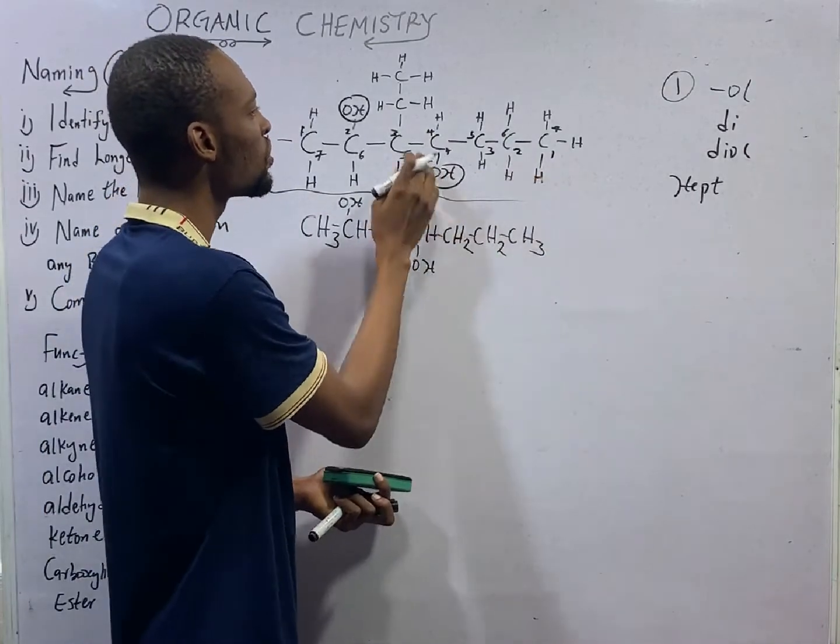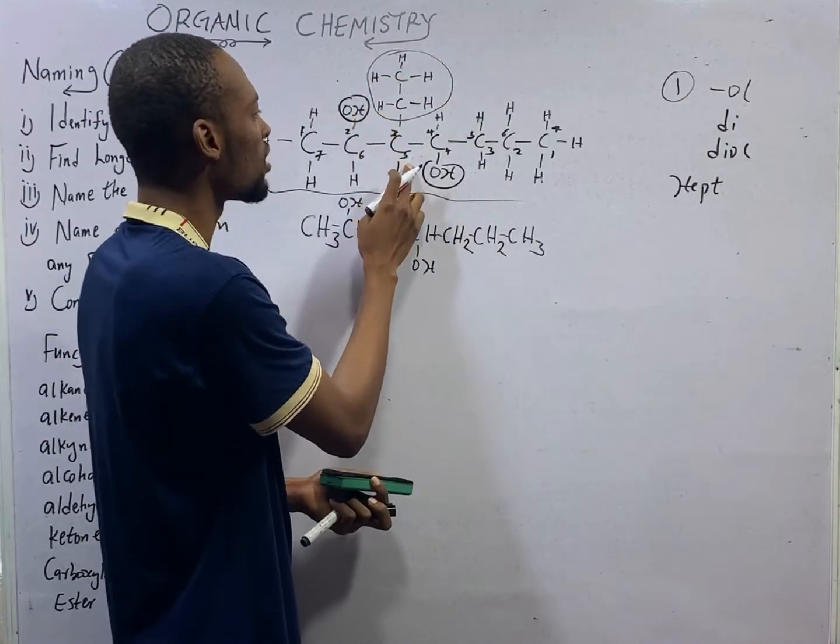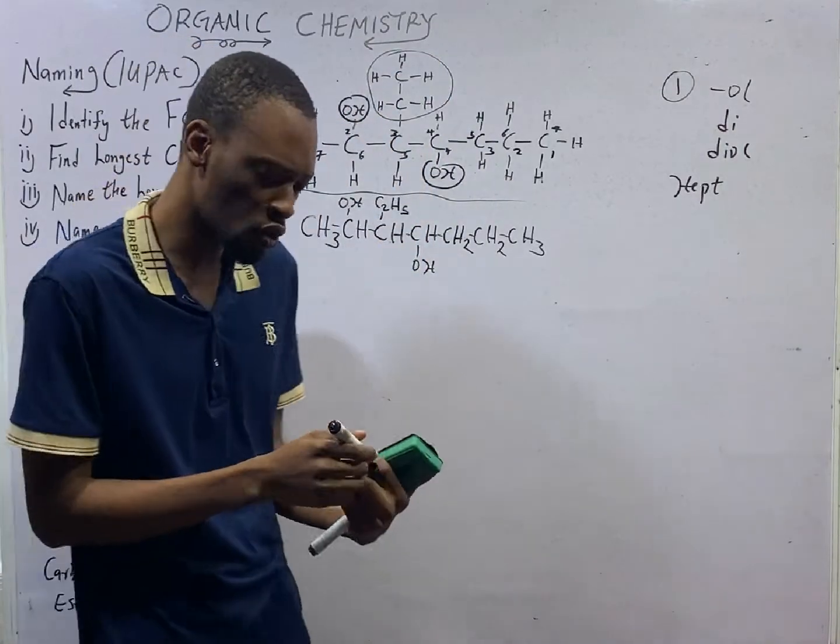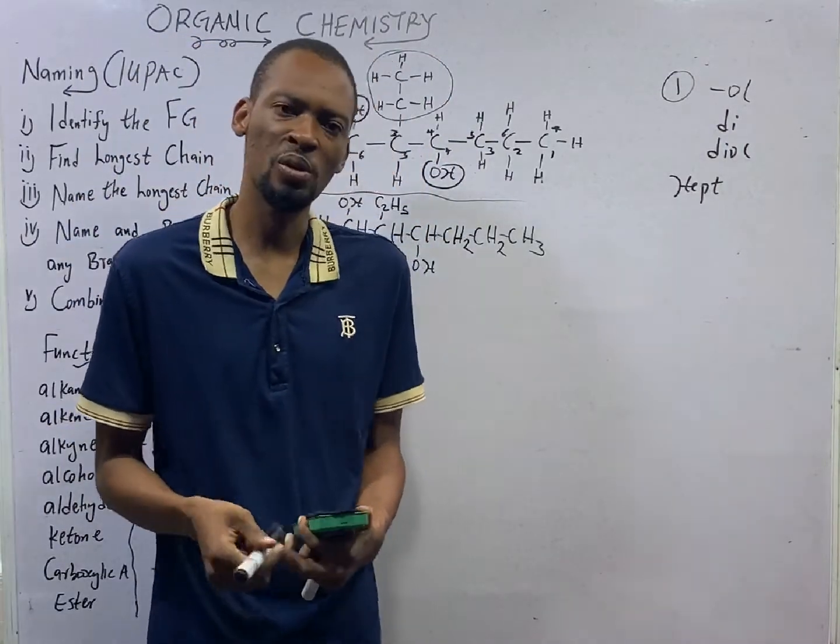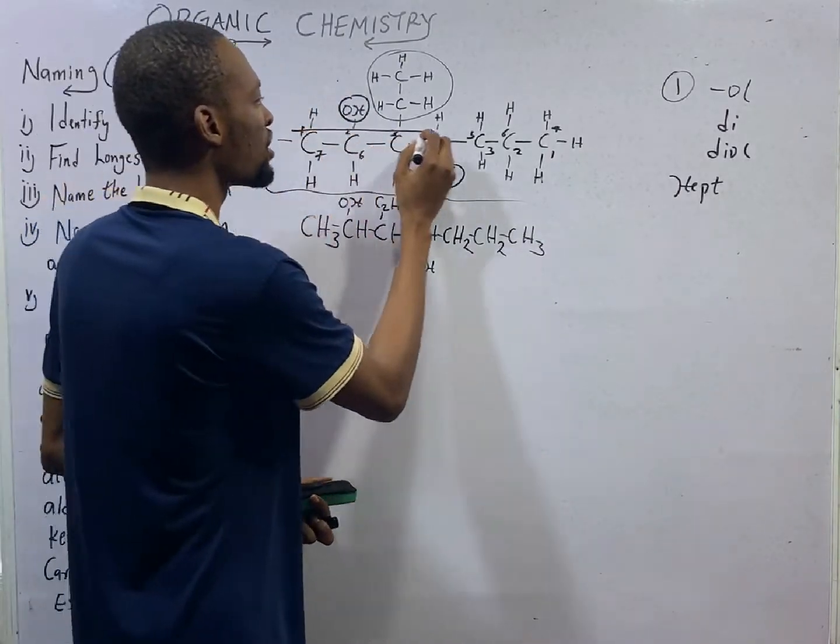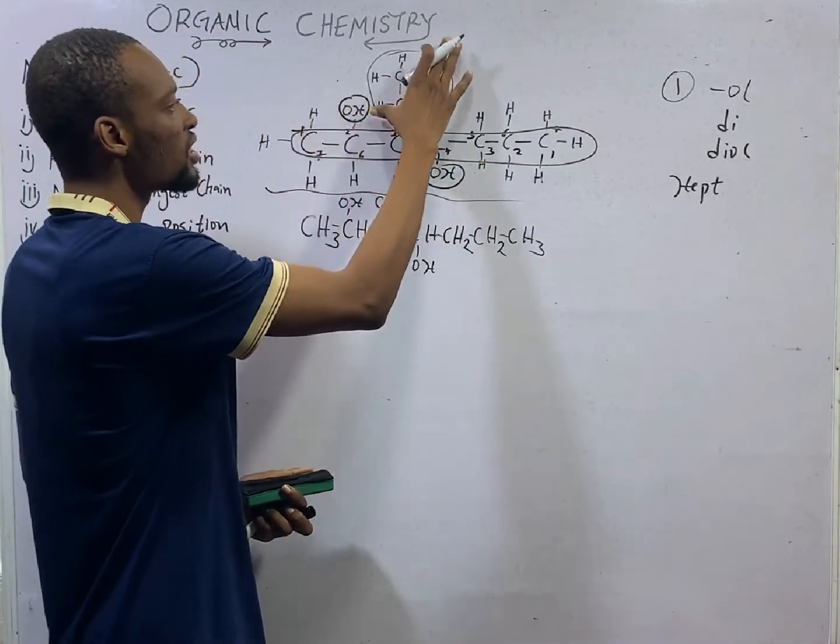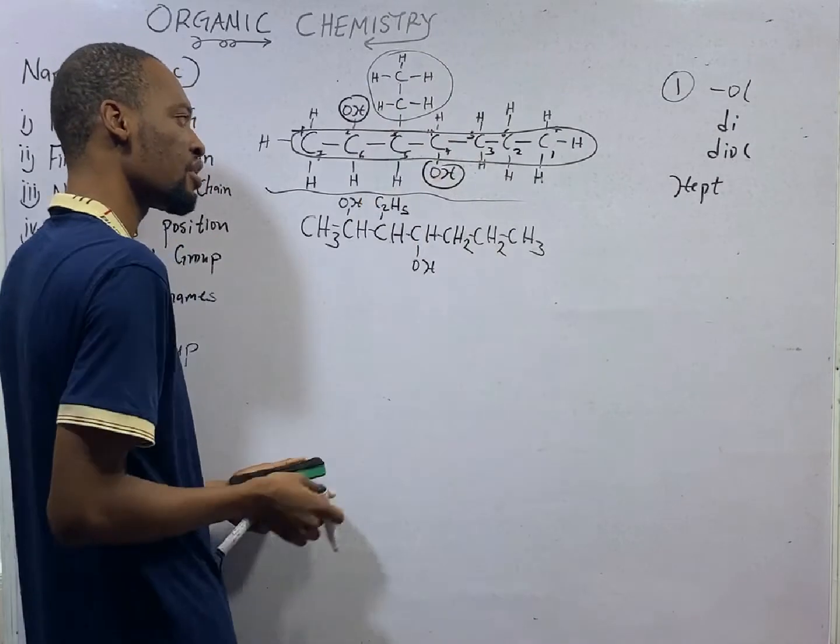Also, going this way, we give this branch a bigger number. So we need the one that will give the functional group the smallest number and also the branch a smaller number. And don't forget, this is our chain. And these are our functional groups. This is the branch. There is a branch.